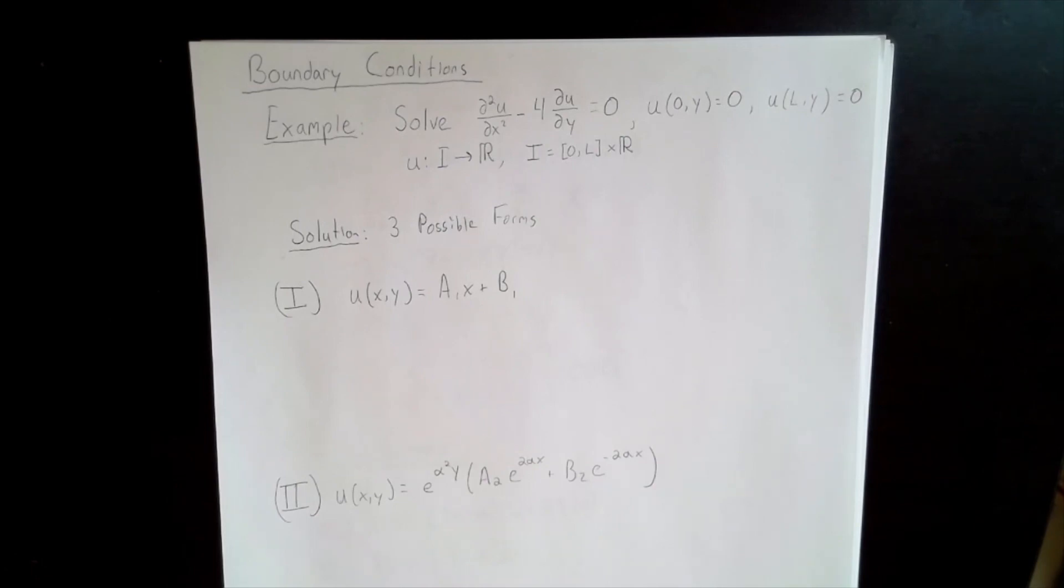In this example, we will show how applying boundary conditions over some domain can be used to specify useful solutions from larger families of solutions. We found three general families of solutions of this PDE in our last lecture. Here we specify a domain from 0 to L in the x variable, but let y vary over the whole real number line. We then specify boundary conditions that state that the solution function is 0 on the boundaries of the x domain, i.e. when x equals 0 and L.